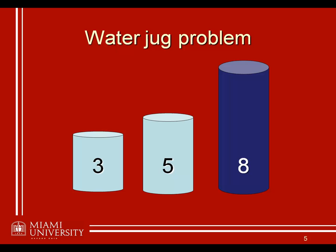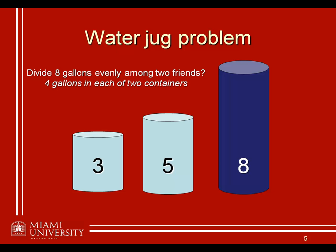The 8-gallon container is full, and you're with yourself and one other friend. What you want to do is fairly split — evenly divide — the 8 gallons of water between you and your friend. So you want to end up with the 8 gallons evenly divided into 2 separate containers, each containing 4 gallons. Since the 3-gallon container can't hold 4 gallons, you'll want to end up with 4 gallons in the 5-gallon container and 4 gallons in the 8-gallon container. How are you going to pull that off with just these 3 containers, the 8-gallon one of which is full?